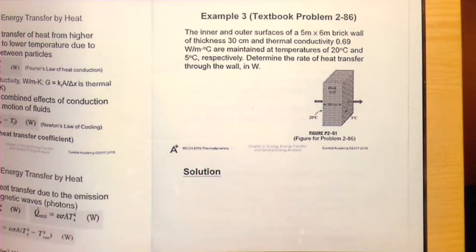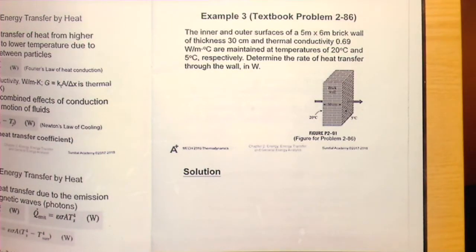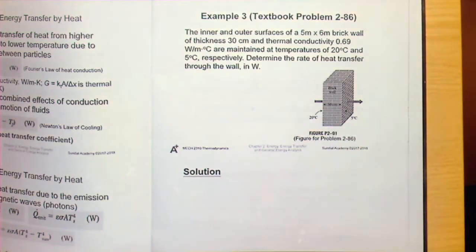Okay, let's talk about a simple example. Example 3. So here we have a brick wall, and the inner and outer surface of this wall. We have a wall that is 5m times 6m. That should be the dimension of the surface of this brick wall.